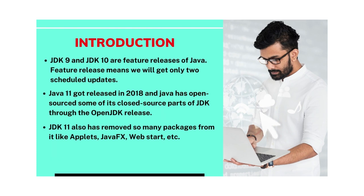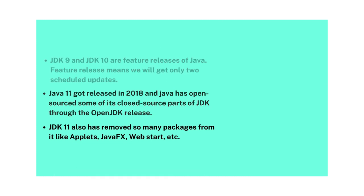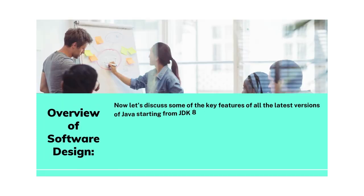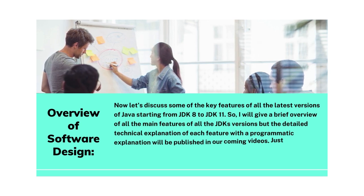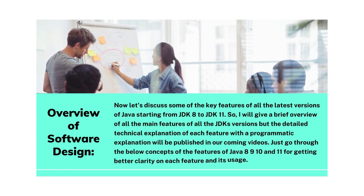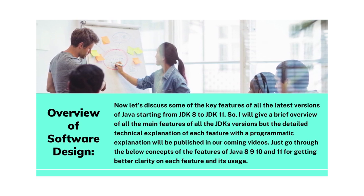JDK 9 and JDK 10 are feature releases of Java, meaning we will get only two scheduled updates. Java 11 got released in 2018 and Java has open-sourced some of its closed-source parts of the JDK through the OpenJDK release. JDK 11 also removed many packages such as Applets, JavaFX, WebStart, etc. Now let's discuss some of the key features of all the latest versions of Java from JDK 8 to JDK 11.